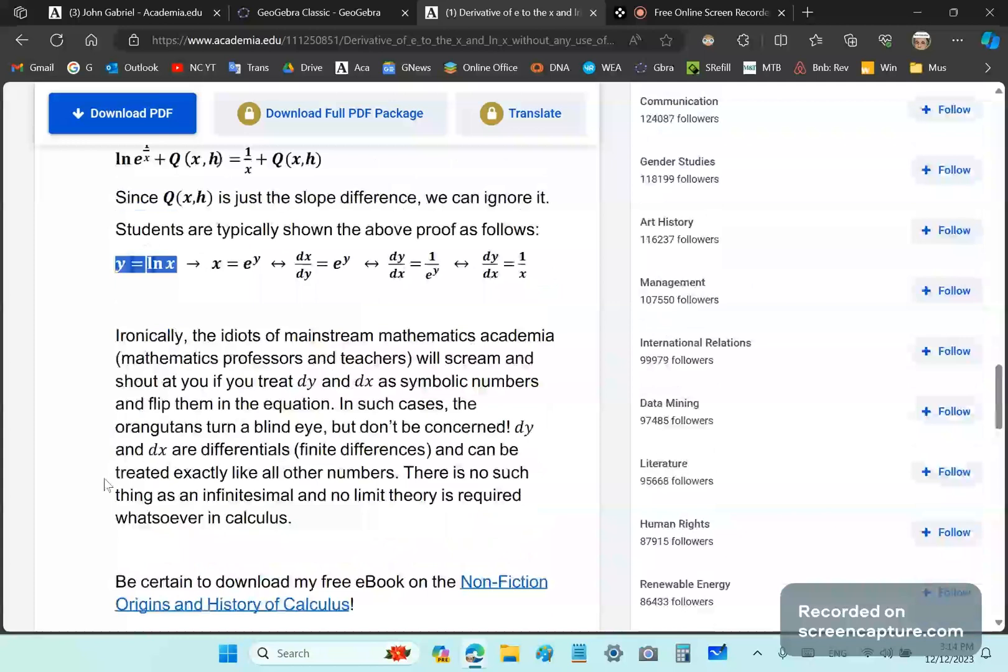Ironically, the idiots of mainstream mathematics academia will scream and shout at you if you treat dy and dx as symbolic numbers and flip them in the equation. But in such cases, they tend to turn a blind eye. Don't be concerned because dy and dx are not infinitesimals or any of that garbage. They're differentials, which means they're just finite differences, and they can be treated exactly like all other numbers.